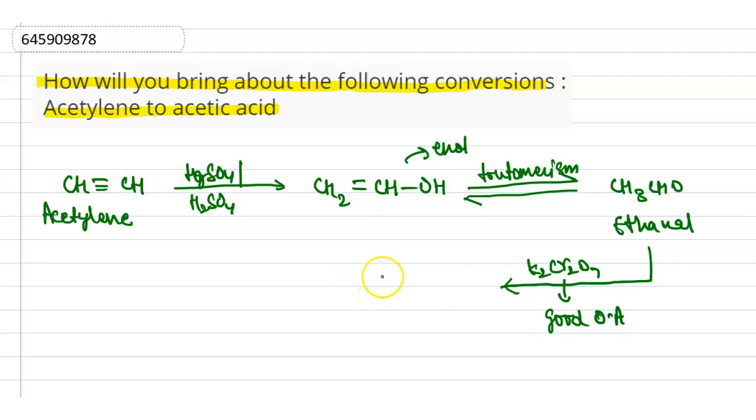And that is CH3COOH, that is our acetic acid. So that is the conversion between acetylene to acetic acid. Thank you.